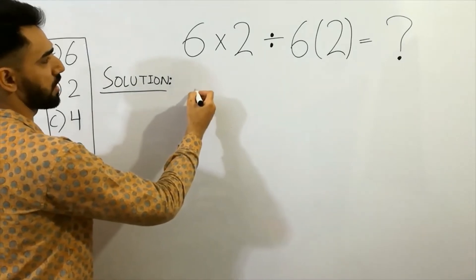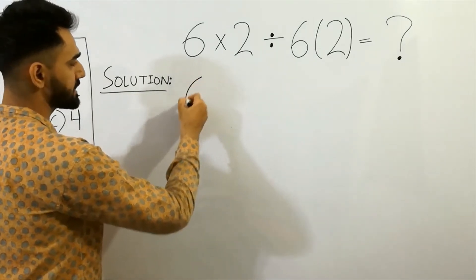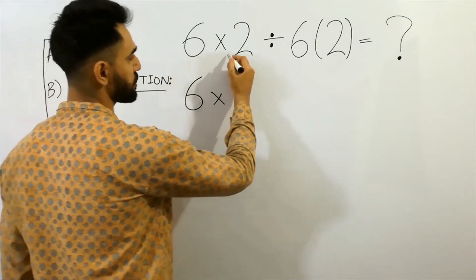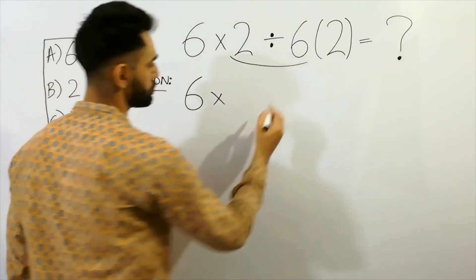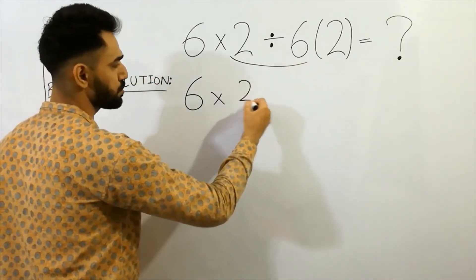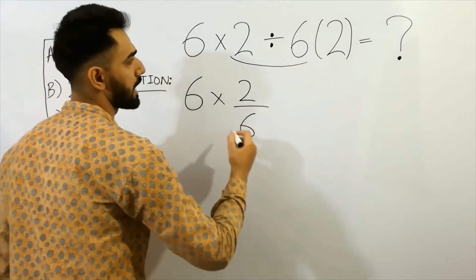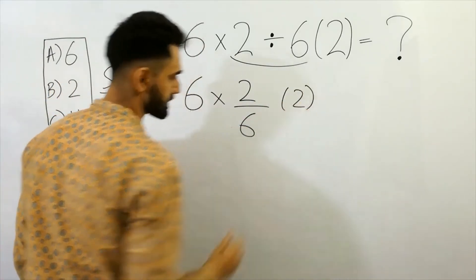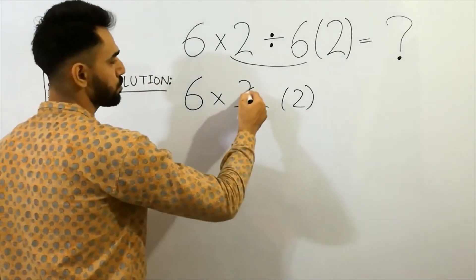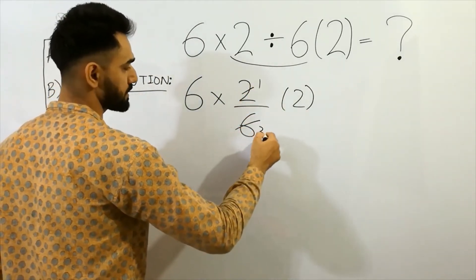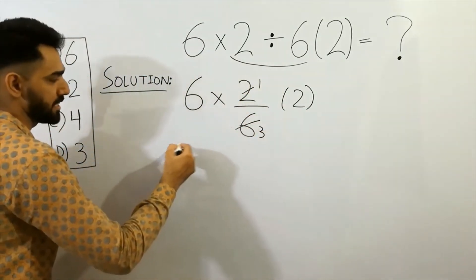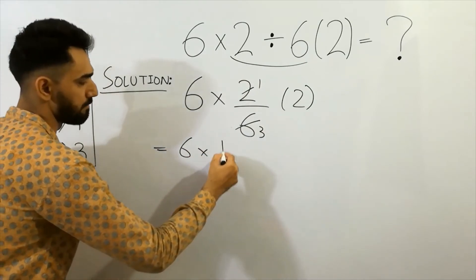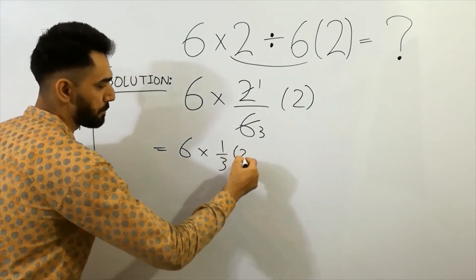First of all you have to do the division — must remember. Six multiplied by: first do the division, so write two by six, then bracket two. Next step: two ones are two, two threes are six — we get six multiplied by one-third, bracket two.